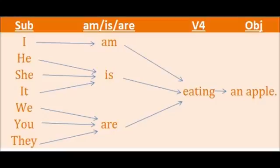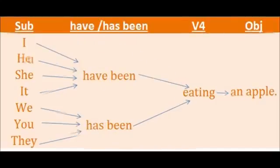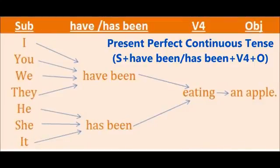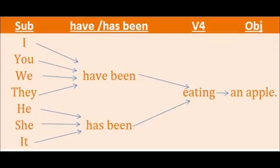The next tense is present perfect continuous tense. The structure is subject plus have been or has been plus V4 plus object. Have been is used by the subjects I, you, we, they. The helping verb has been is used by he, she, it.